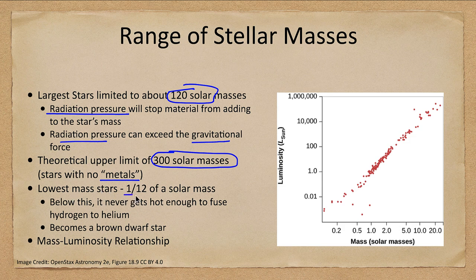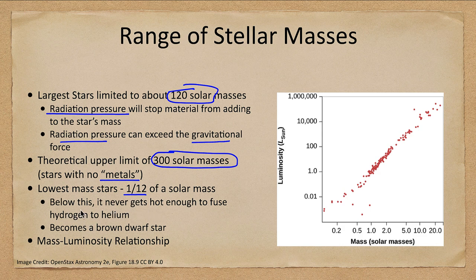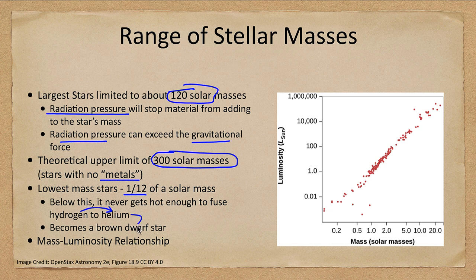The lowest mass stars are about one twelfth of a solar mass. This is where they never get hot enough to fuse hydrogen into helium and that becomes then a brown dwarf star.